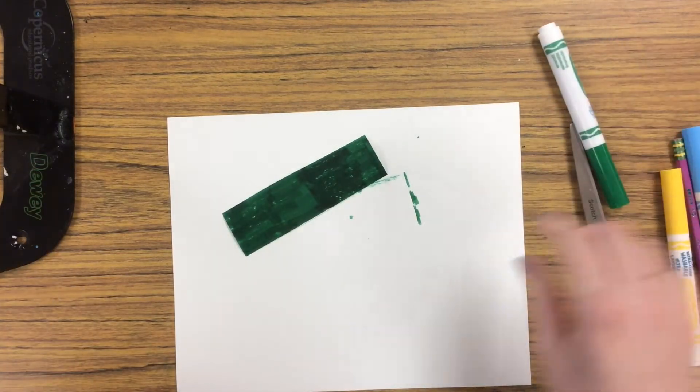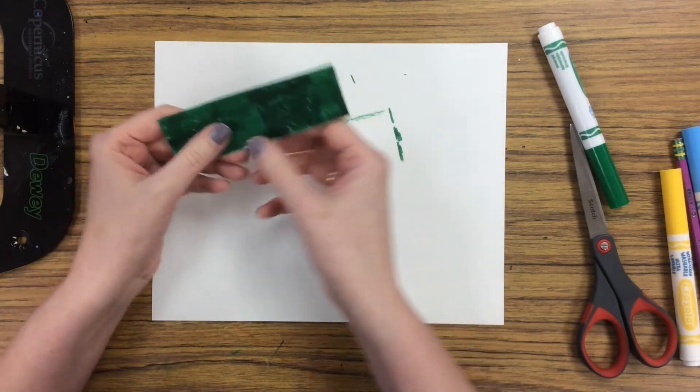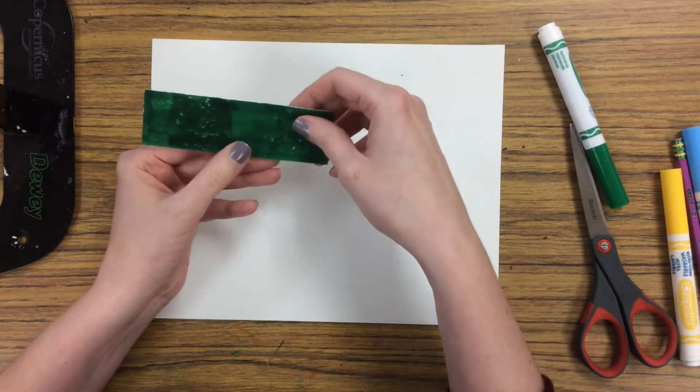This also works really well if you have green construction paper that is available for you to use, but if not you can always just color a strip of white paper instead.